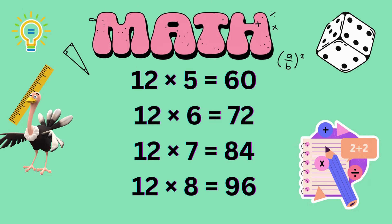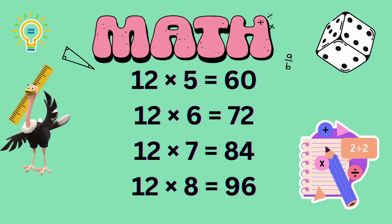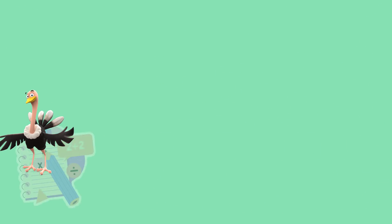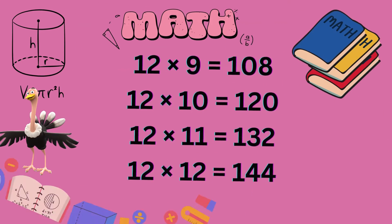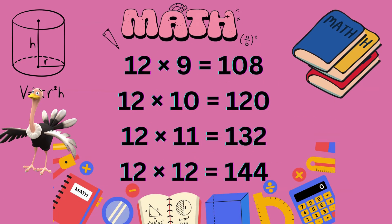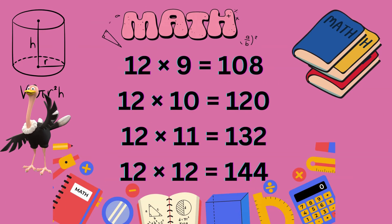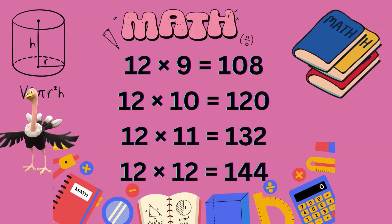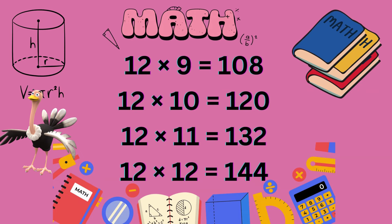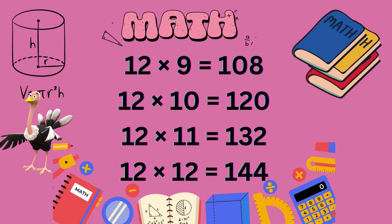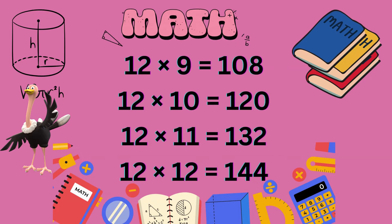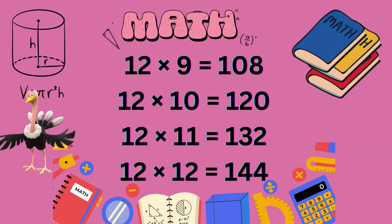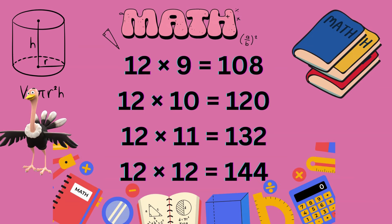What is 12 times 7? 84. What is 12 times 8? 96. What is 12 times 9? 108. What is 12 times 10? 120.